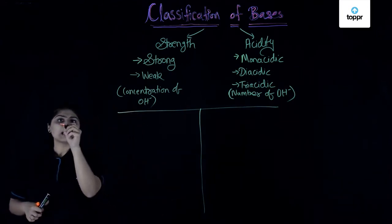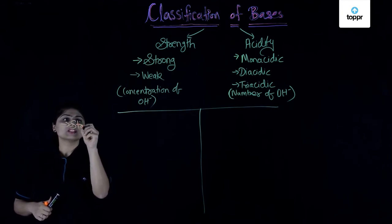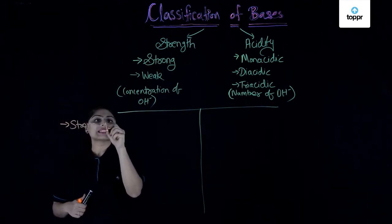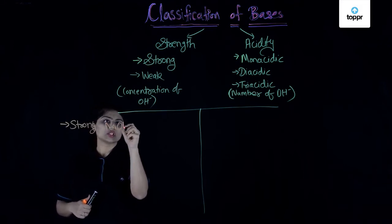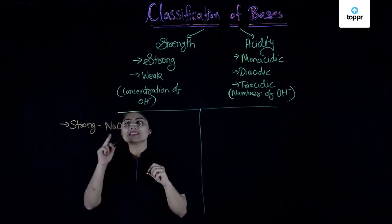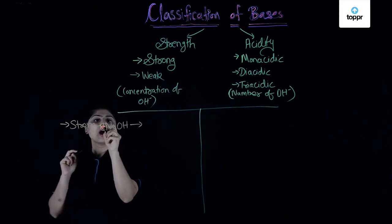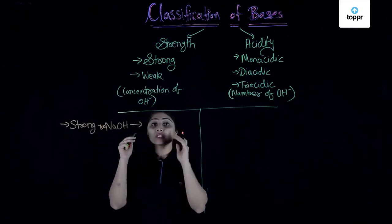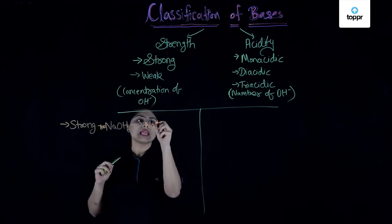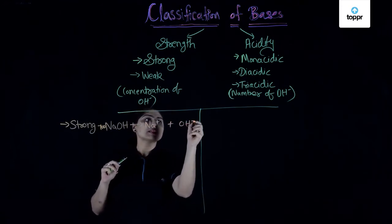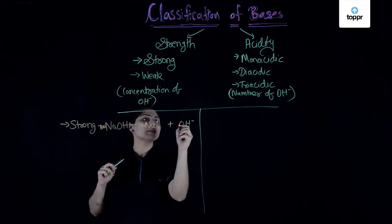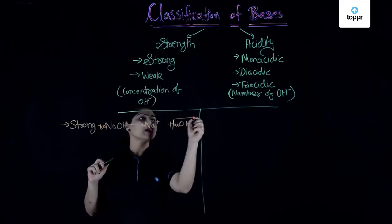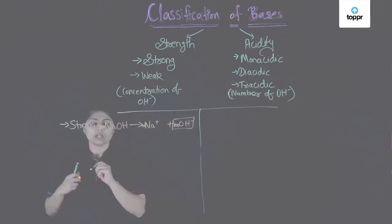According to strength, we have strong and weak bases. A very common strong base is NaOH, that is sodium hydroxide. Suppose we take 100 molecules of NaOH — all 100 molecules will split in water and form Na+ and OH-. They will form 100 Na+ and 100 OH- because all of them have split. So in the solution we have 100 OH-.